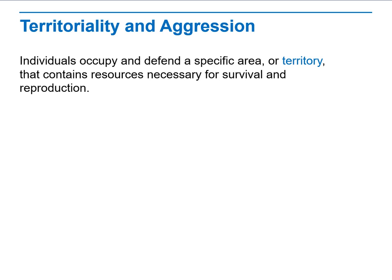Territory and aggression: individuals occupy and defend a specific area which they consider their home. A territory is a place that contains the resources necessary for them to survive and reproduce, enabling them to maintain their ability to survive in that condition and use it as a habitat.